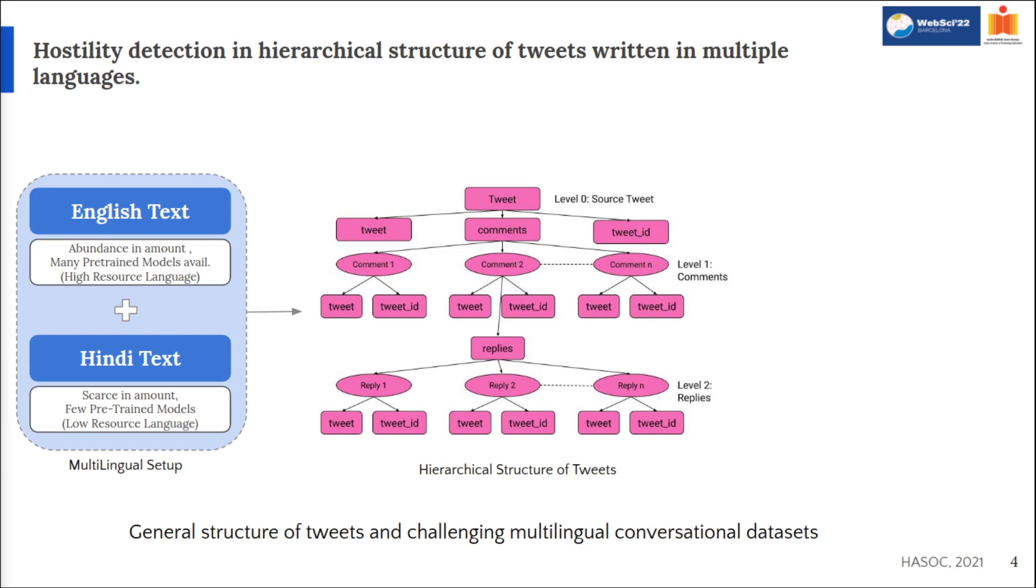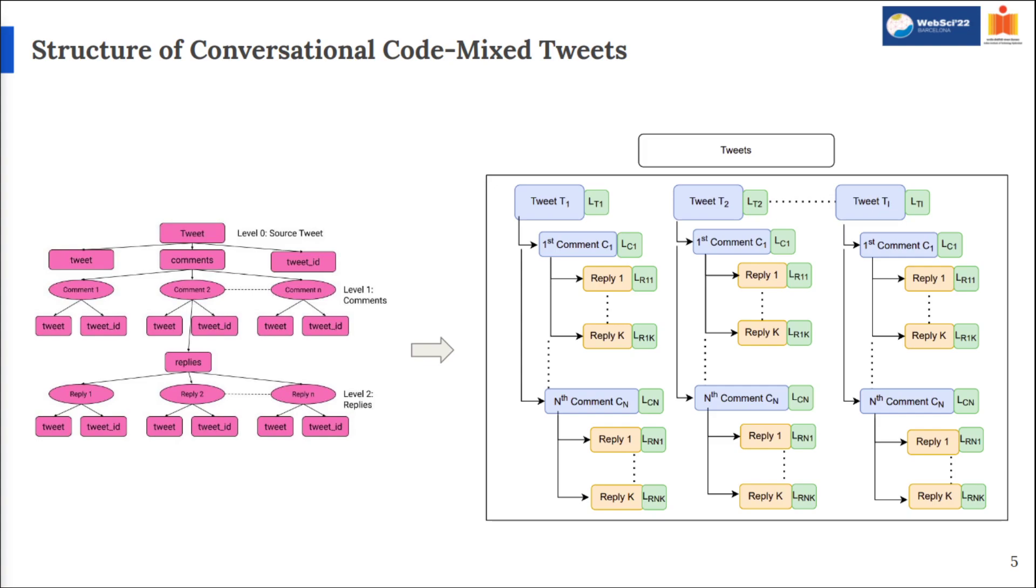We work on the same structure with tweets, comments and replies called the Hierarchical Code Mixed Conversational Data. Finally, we intend to find hostile content present in this Hierarchical Code Mixed Conversational Data in this paper. The hierarchy of the data is as shown in the figures. We can see that there are n number of tweets, each tweet containing n number of comments and each comment containing k number of replies with each reply containing multiple other replies as well.